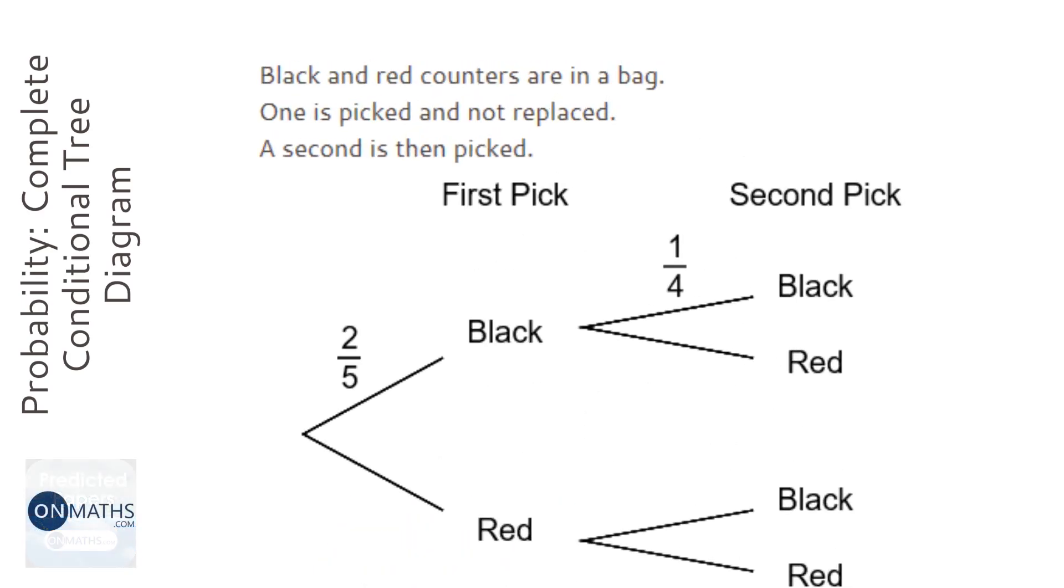The first thing we need to realize with this question is that if you have a tree diagram, both shoots out of each section have to add up to make one because you have to go down one of those lines.